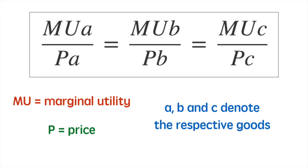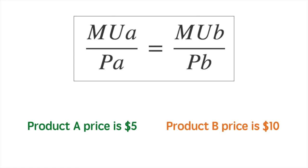If you imagine yourself in the supermarket, you can understand how overwhelming it can be to maximize utility from the expenditure of your next dollar when considering amongst thousands of goods. For now, let's just focus on using two in a simplified model. Let's consider two goods: Product A, which costs $5 per unit, and Product B, which costs $10 per unit.